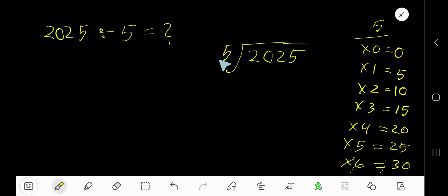2025 divided by 5. Here 5 is the divisor, so we need the multiplication table of 5. 5 times 0 is 0, 5 times 1 is 5, 5 times 2 is 10, 5 times 3 is 15.